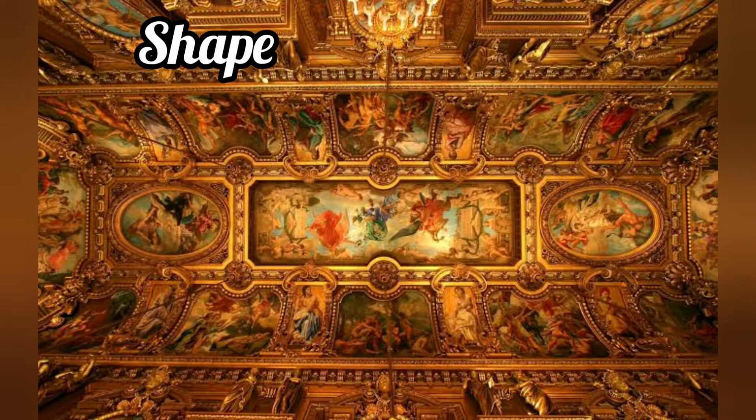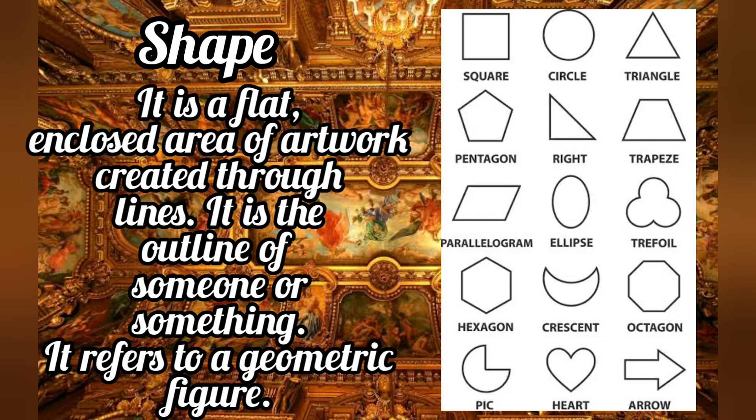Next is shape. It is a flat, enclosed area of an artwork created through lines. It is the outline of someone or something and refers to a geometric figure. Examples are square, triangle, circle, and rectangle.